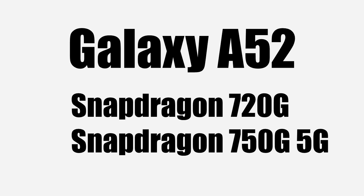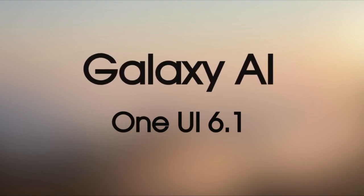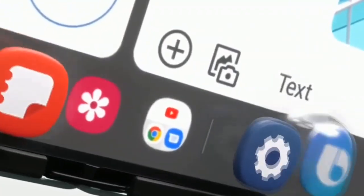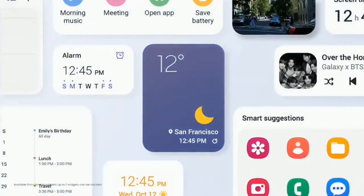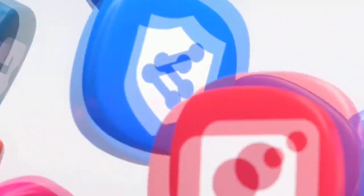The Galaxy A52 can easily handle the new AI features because it has a Snapdragon 720G chipset, which can easily run OneUI 6.1 without any issues. OneUI 6.1 will bring a lot of features related to AI, and Samsung will integrate AI into different OneUI apps.